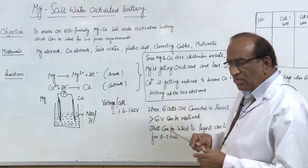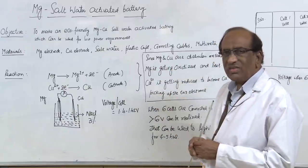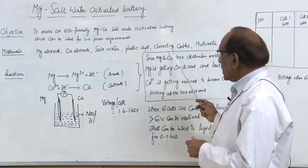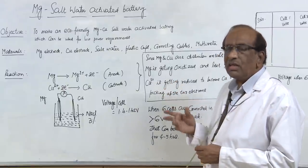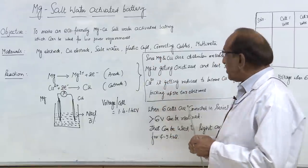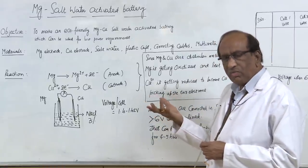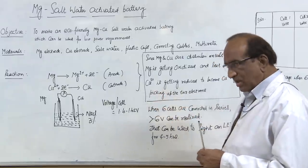Some plastic cups, 5-6 plastic cups you can have them so that you can connect all the 6 cells in series. Connecting cables with alligator clips and a multimeter to measure the voltage and current or functioning of an LED bulb and various other things.